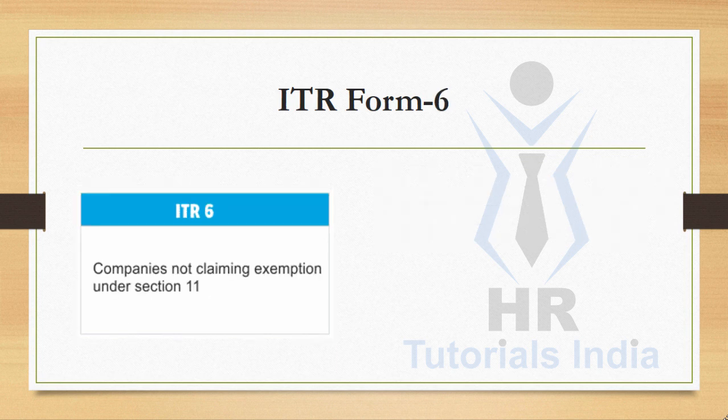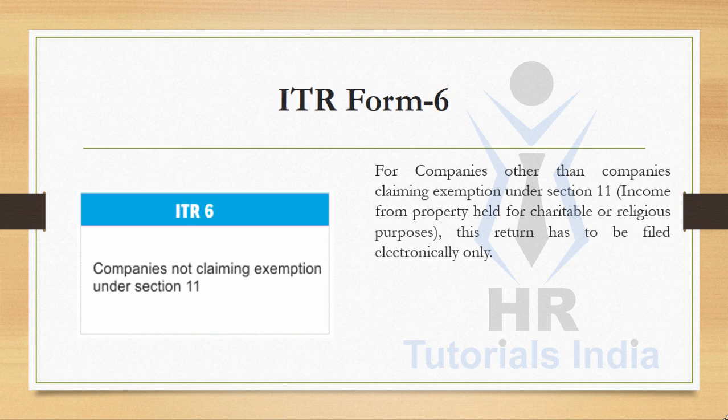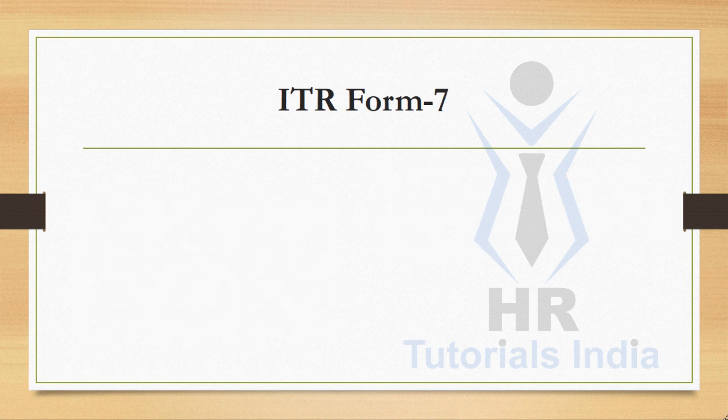ITR Form 6 is for companies other than companies claiming exemption under Section 11, which covers income from property held for charitable or religious purposes. This return has to be filed electronically only.